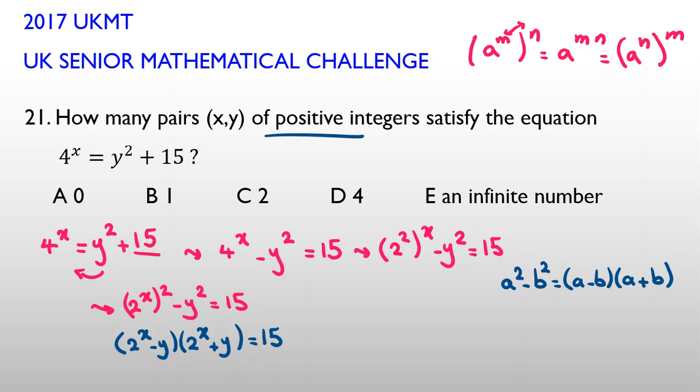By this factorizing, and we know there are positive integers. So it is positive, because x is positive, y is positive, it is positive. And also, because y is a positive number, (2^x - y) is strictly less than (2^x + y). So if I want to write the cases, (2^x - y)(2^x + y) = 15. So the cases are 1×15 and 3×5. Only we have these two cases.